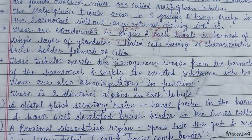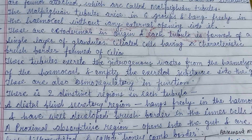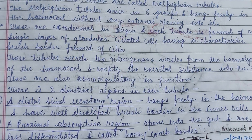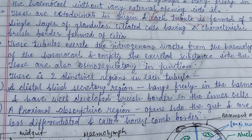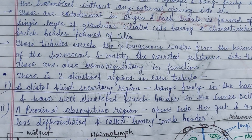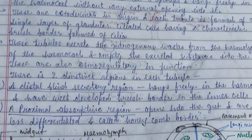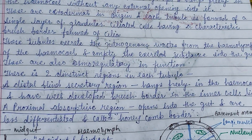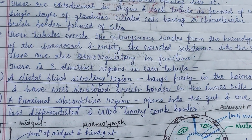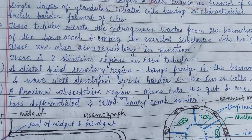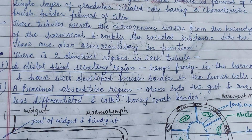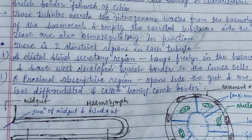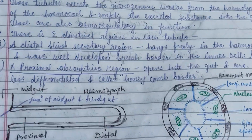These tubules arise in six groups and hang freely in the haemocoel without any external opening into it. It is of ectodermal origin, and each tubule is formed of a simple layer of glandular cells having a characteristic brush border of cilia.